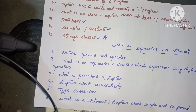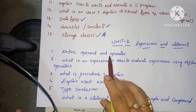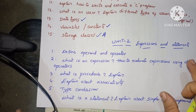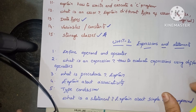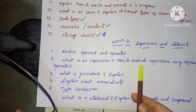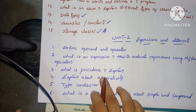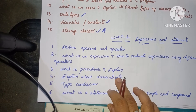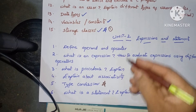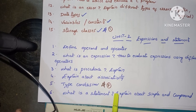Unit 2 — expressions and statements. Short answer questions include: 'What is an operand?' and 'What is an operator?' Videos are already available in my channel playlist — search PPS or C programming. Next: 'What is an expression?' and 'How to evaluate expressions using different operators?' with numerical examples. 'What is precedence?' and 'Explain associativity with examples.' Type conversion is also a very important question here.